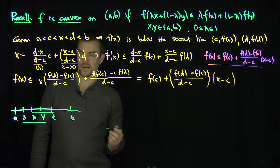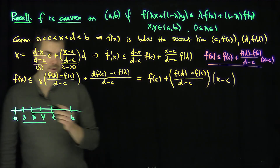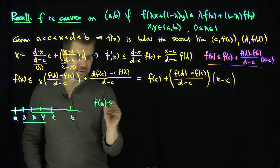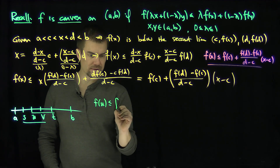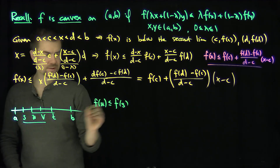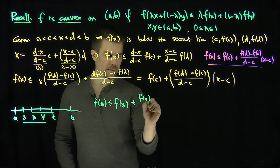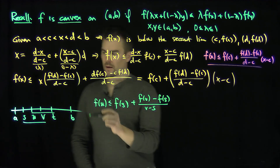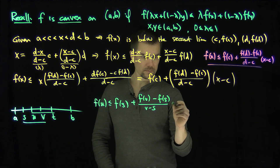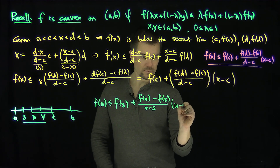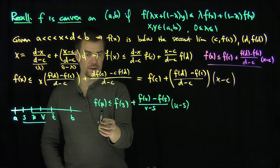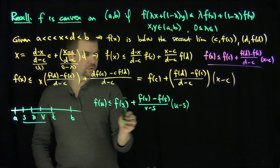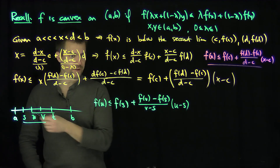Since the points s, u, and v are configured with s < u < v, I get that f(u) ≤ f(s) + [f(v)−f(s)]/(v−s) · (u−s). We can check: when u = s the extra term vanishes giving f(s), and when u = v it gives f(v). So that works.